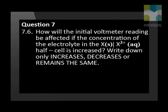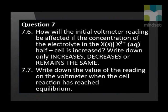How will the initial voltmeter reading be affected if the concentration of the electrolyte in the X half-cell is increased? You should only use the words increases, decreases, or remains the same — no explanation is required. Write down the value of the reading on the voltmeter when the cell reaction has reached equilibrium.